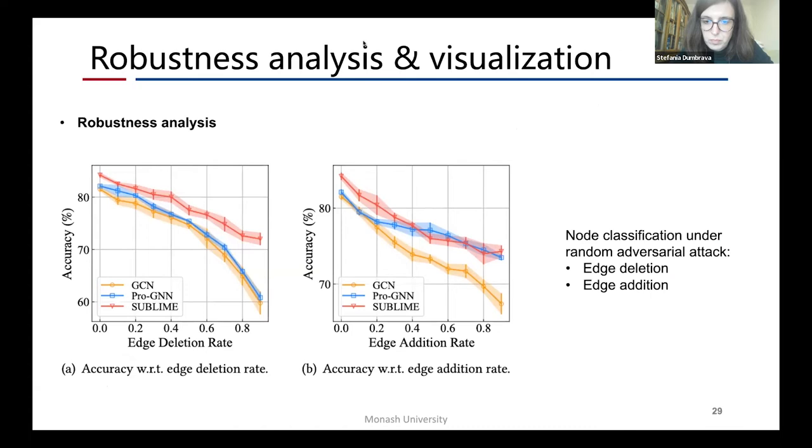To verify the robustness of sublime, we conduct node classification experiments on graph under random adversarial attack. Compared with the supervised graph structure learning method ProGNN, our method has competitive or superior performance in both settings, especially in the edge deletion setting.